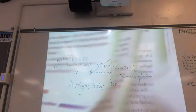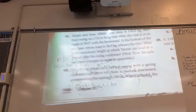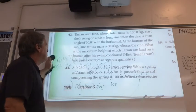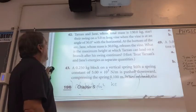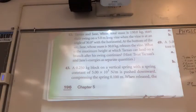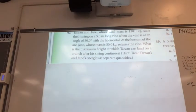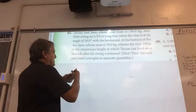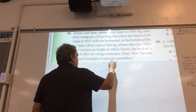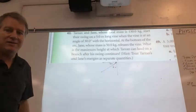Let's go to our next one, which is 42. Tarzan and Jane, whose total mass is 130 kilograms, start their swing on a 5 meter long vine. The vine's at a 30 degree angle with the horizontal, so it's this angle here. From the horizontal it's 30 degrees here, so from the vertical it's 60 degrees. That's a tricky way of wording it.